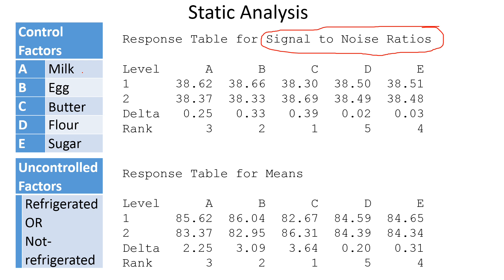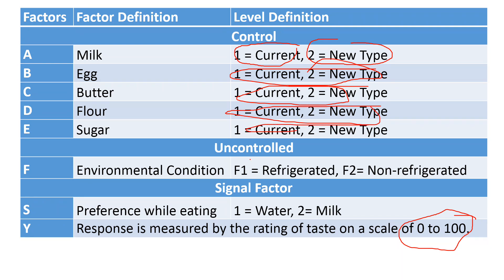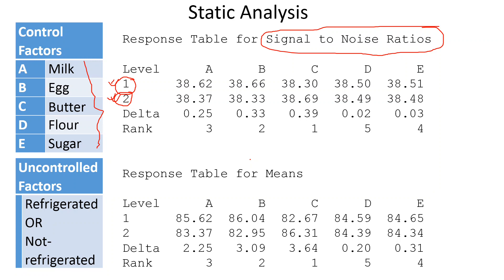One thing in Taguchi: you're not really deciding which factor is significant. What you're deciding is what level of this factor should be used to bake the cake. You need all five ingredients to bake the cake, so you can't say sugar is not significant and not include it. What you're deciding in Taguchi is the level of each factor. For example, is the current milk type better or the new milk type better? You're deciding between level one and level two.